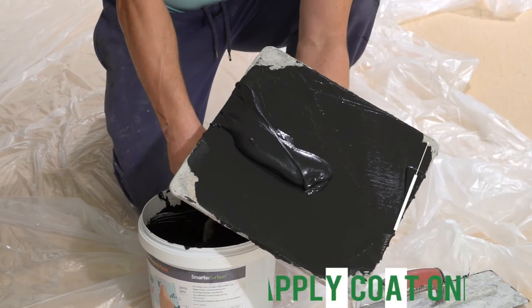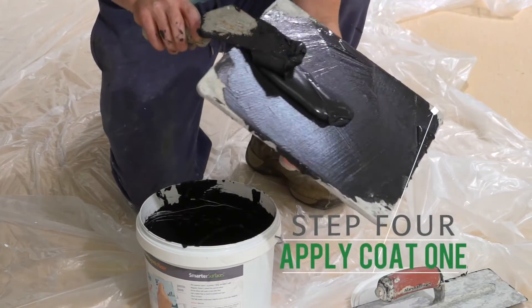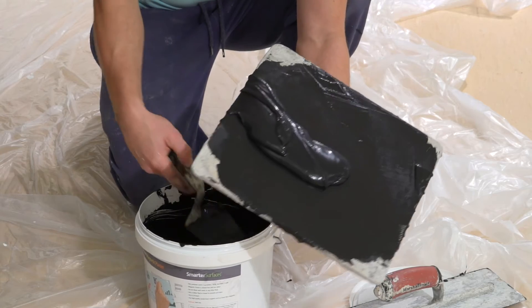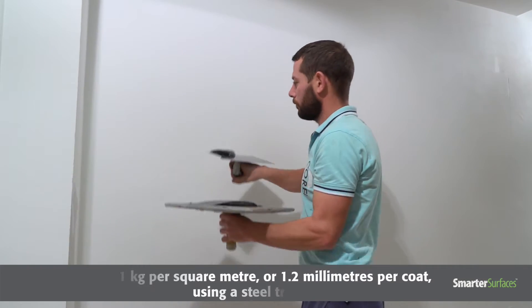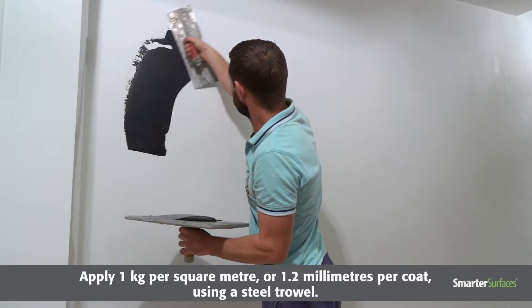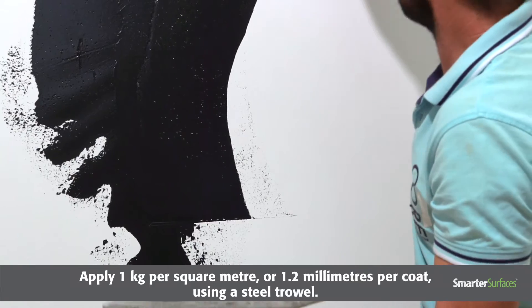Step 4: Apply coat 1. It is now time to apply the plaster. For professional installers, apply 1 kilogram per square meter or 1.2 millimeters per coat using a steel trowel.